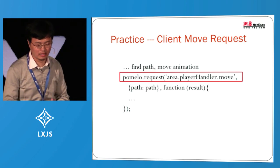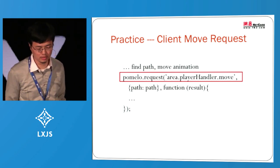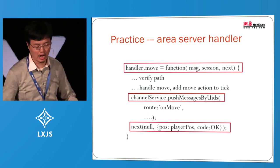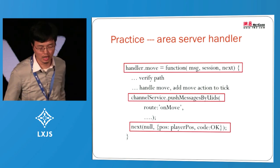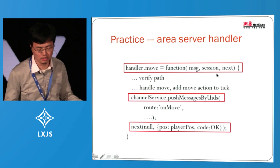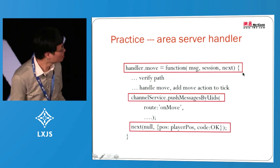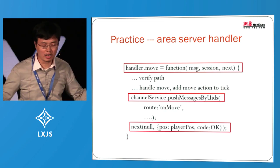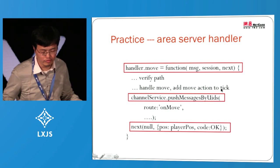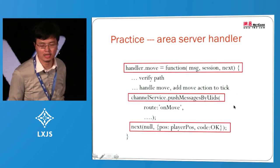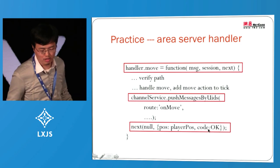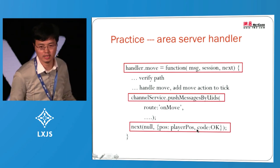Let's jump to the code. The client side just sends the request to the server — client calls method to server, quite straightforward. The second part is where the server receives the message. Our signature is a little different from HTTP because we are using long connections. The message is equivalent to request, and session because we use a long connection. The third parameter is next because we are using Node.js and need a callback. In this business method, all we need to do is verify paths and handle the move action. After that, I use the channel API — the broadcast API — to push a message back to all clients who can see me. In the callback, the framework will automatically push the second parameter to the client as a response.